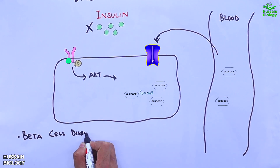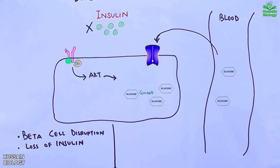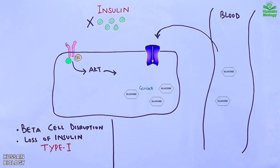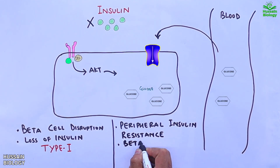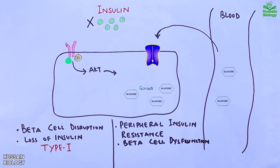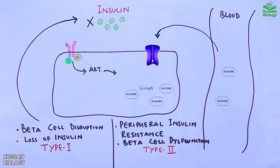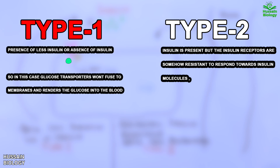When we have beta cell disruption that leads to loss of insulin, this diabetes is termed type 1 diabetes and is associated with autoimmune disease. On the other hand, when we have peripheral insulin resistance, that leads to beta cell dysfunction, and this diabetes is termed type 2 diabetes. In both cases glucose movement is halted, but in type 1 diabetes we get little or no production of insulin, whereas in type 2 diabetes insulin is produced but the insulin receptors do not respond to insulin molecules, rendering the cell resistant to insulin.